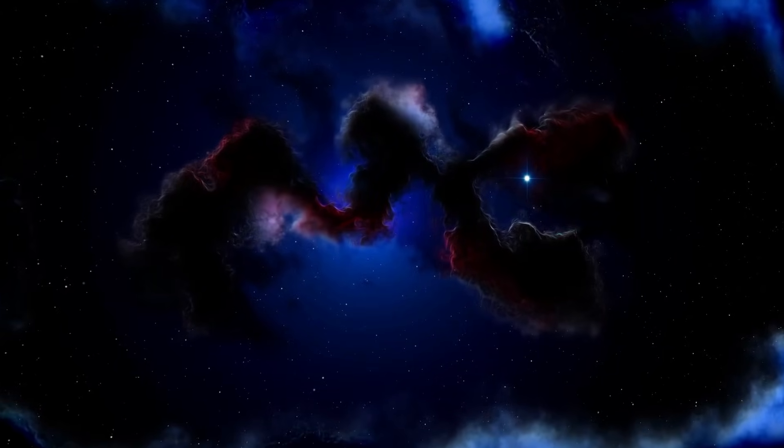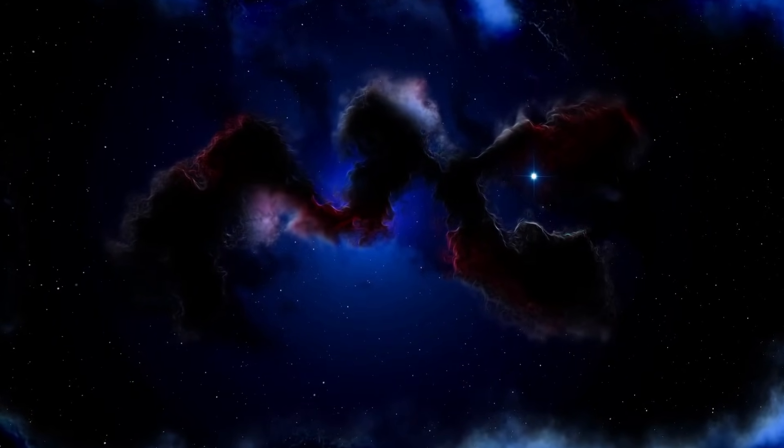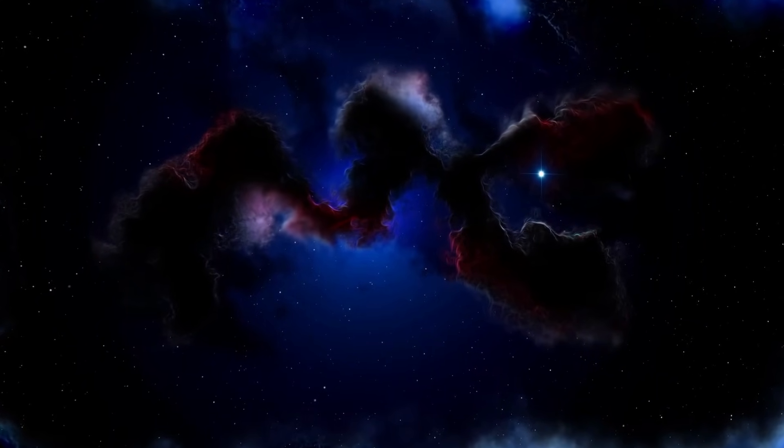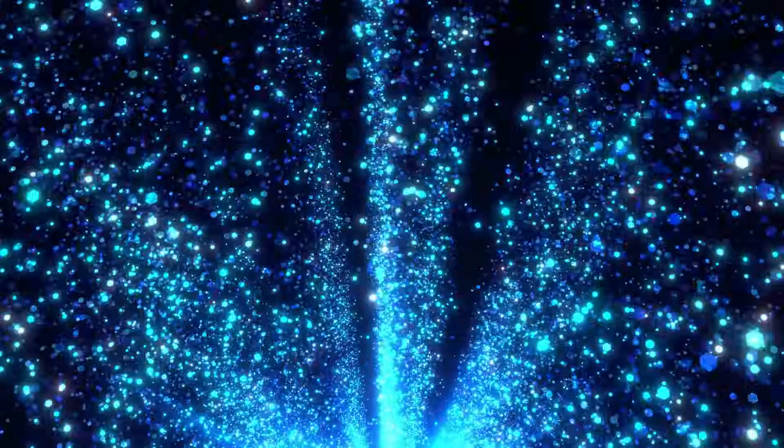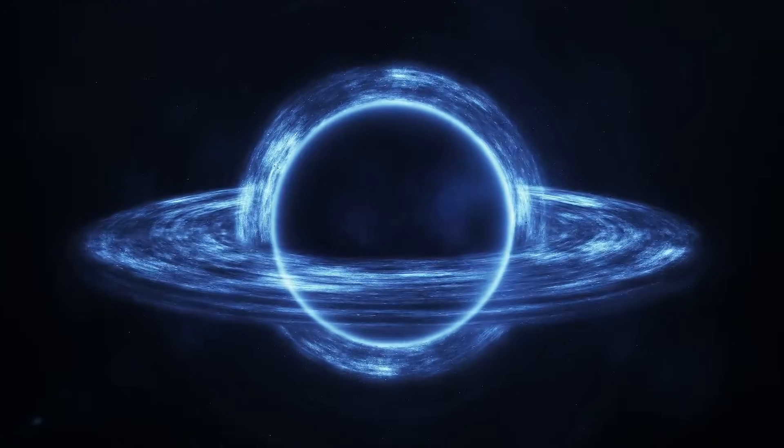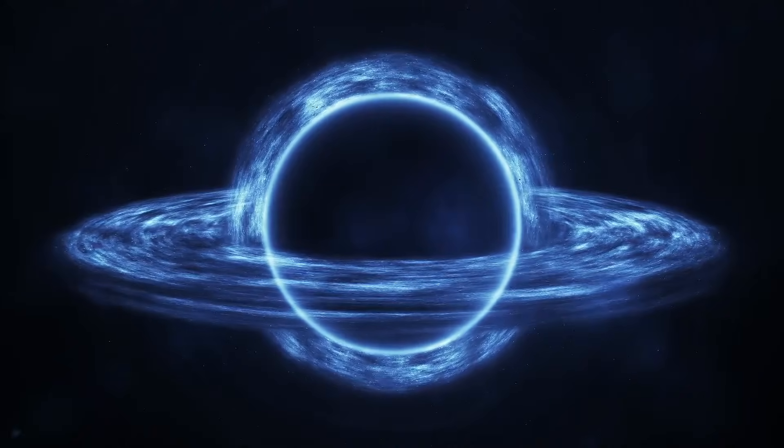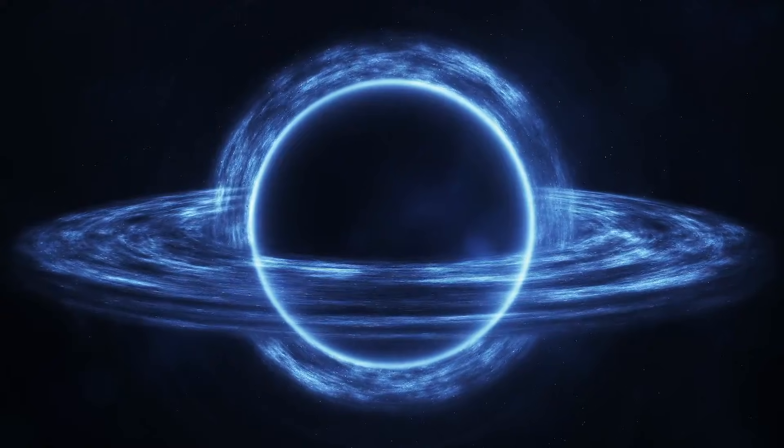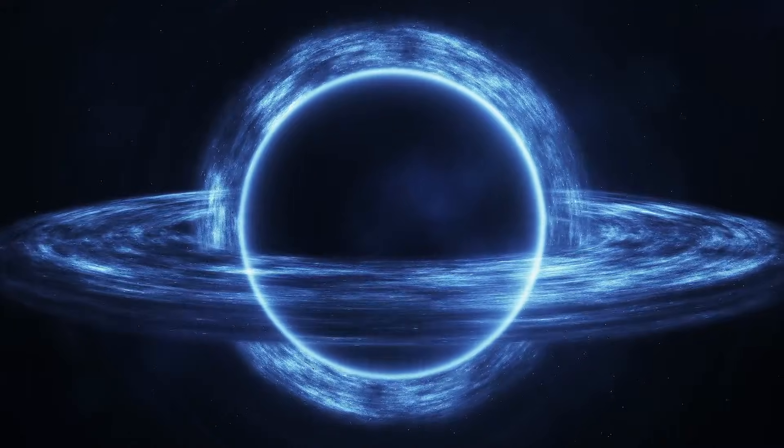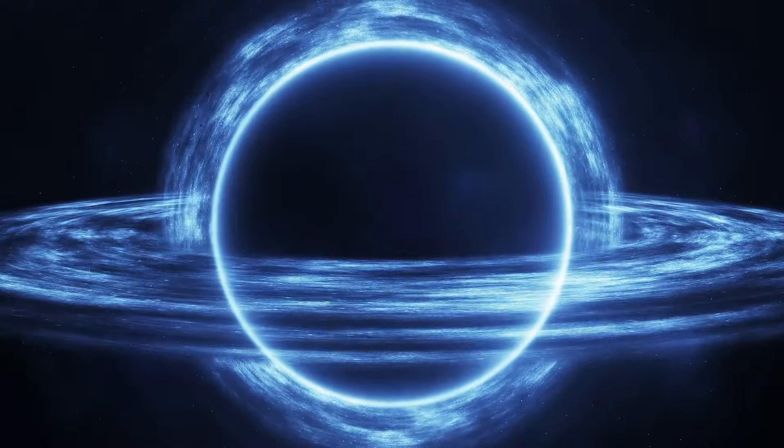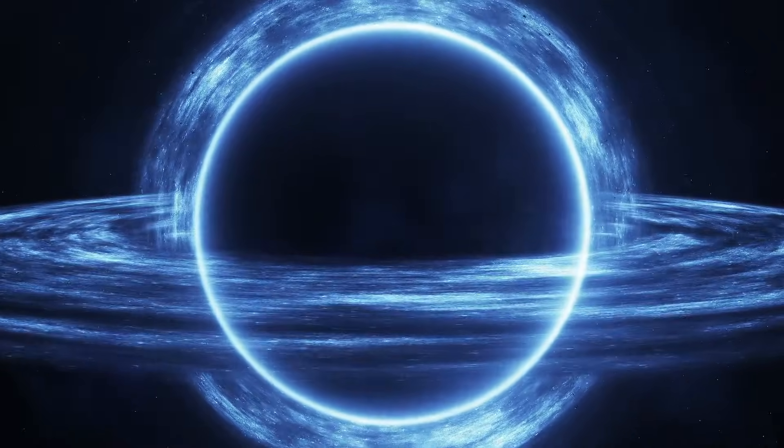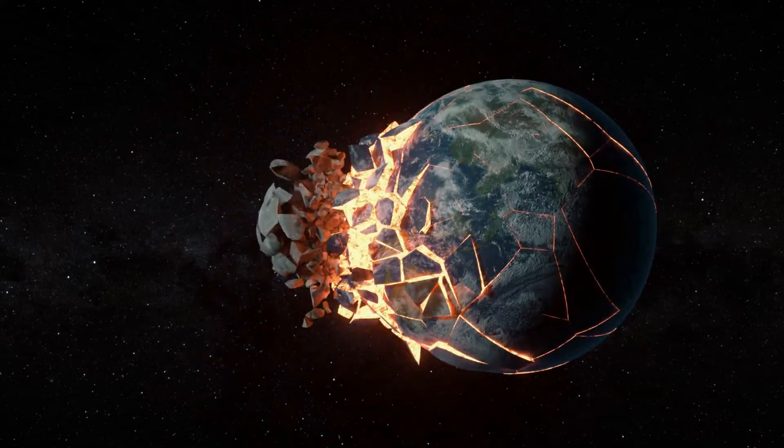Dark matter is not just invisible. Plenty of things in the universe are hard to detect. Neutrinos slip through a trillion miles of lead without slowing down. Black holes hide behind their own gravity. But dark matter is even stranger. It doesn't shine. It doesn't absorb. It doesn't scatter. It doesn't warm up. It doesn't cool down. And most importantly, it doesn't collide with anything we're made of.